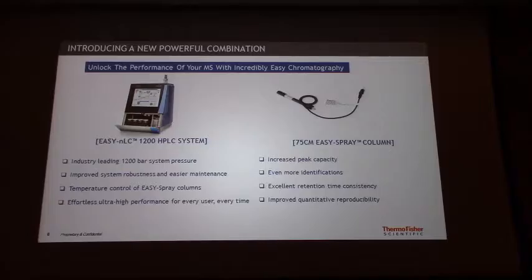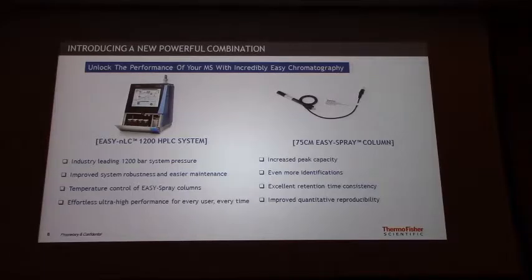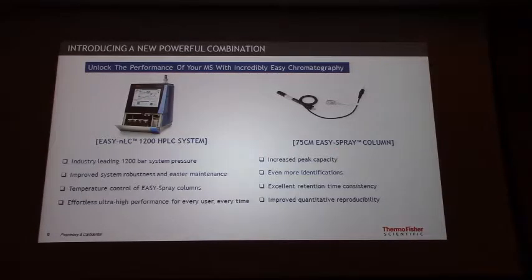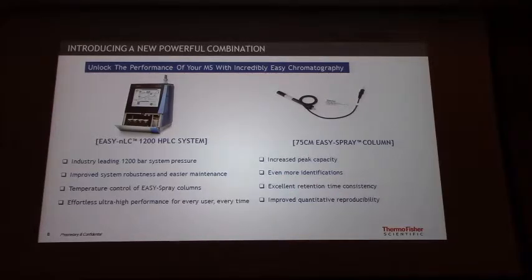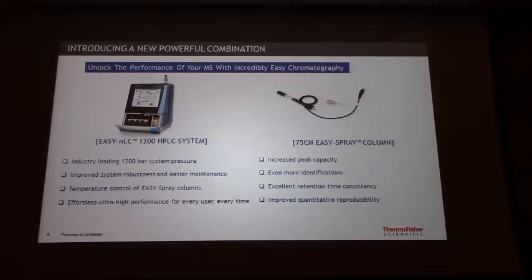The key for being successful in this workflow is the EasyNLC-200, which is a very small, compact LC that allows for high pressure up to 200 bar. We introduced it last year at HUPO. And what we are introducing this year is a 75-centimeter Easy-Spray column that allows very high peak capacity, very reproducible retention time, and even more identifications. It's a 75-centimeter, 75-micron ID column — it fits right in your machine, it's plug-and-play, and I think there is nothing in the market that allows for such capability.